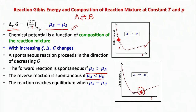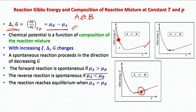Let us have a look at reaction equilibrium. At equilibrium, the Gibbs free energy at a given temperature and pressure for a given composition must be a minimum. That occurs at the minimum point of the curve, where (∂G/∂ψ) at T,P equals zero. This can happen only when μB equals μA — and that is the condition for chemical reaction equilibrium.